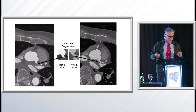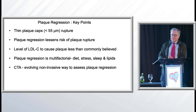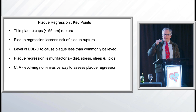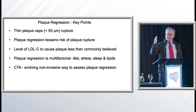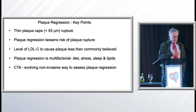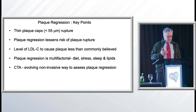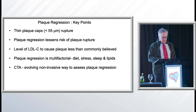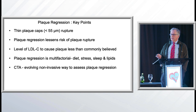To summarize: thin plaque caps less than 55 microns are the ones that tend to rupture; when you get a thick cap over 85 microns, they don't rupture — that's maybe four red blood cells thicker. Plaque regression lessens the risk of plaque rupture. The LDL level needed to cause plaque is lower than commonly believed. Plaque regression is multifactorial: diet, stress, sleep, and lipids. And CTA is evolving to be a good way to assess this — not that everybody needs a CTA, but it'll help us learn more.